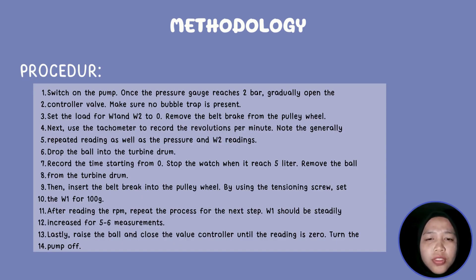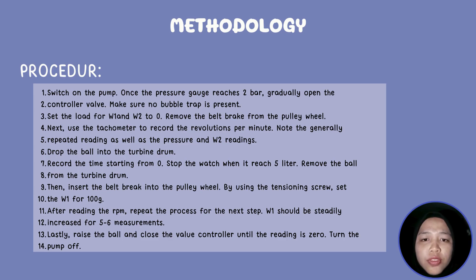For the procedure, the first step is to switch on the pump. Once the pressure gauge reaches 2 bar, gradually open the controller. Make sure no bubble is trapped in the system. Set the load with W1 and W2 to zero, and remove the brake from the pulley wheel. Next, use the tachometer to record the revolutions per minute.